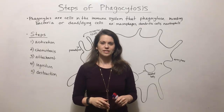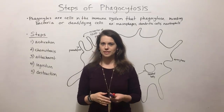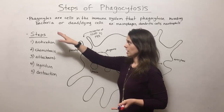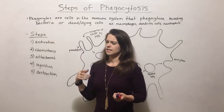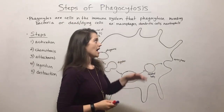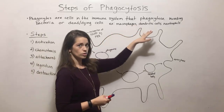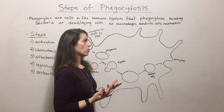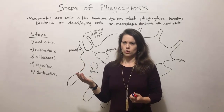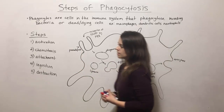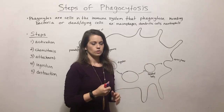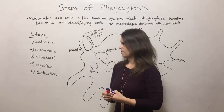Hi everyone and welcome to Biology Professor. Today we're going to talk about the steps of phagocytosis. Phagocytosis is a really important process in the immune system carried out by phagocytic cells, or phagocytes. These are cells in the immune system that phagocytose — meaning they bring in and destroy invading bacteria as well as dead or dying cells within the organism. Some examples include macrophages, dendritic cells, and neutrophils.